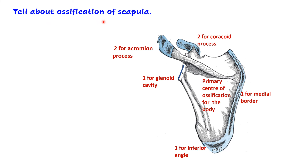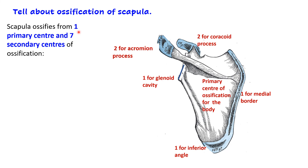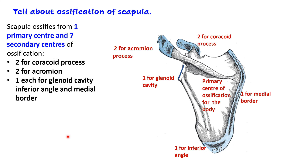Sometimes you are asked about the ossification of the scapula. There is one primary center of ossification for the body and seven secondary centers. The seven secondary centers are: two for the acromion process, two for the coracoid process, one for the glenoid cavity, one for the medial border, and one for the inferior angle. Note there is no secondary center of ossification for the spine. A memory aid: after coracoid (two) and acromion (two), remember medial border, inferior angle, and glenoid cavity for the remaining three.